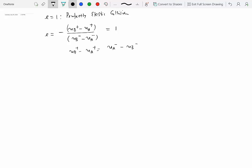Bringing all A terms to the same side, we get VA minus plus VA plus equals VB plus plus VB minus. That's what we get from E equal to 1.